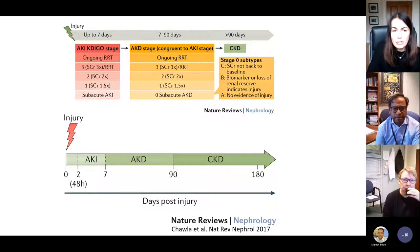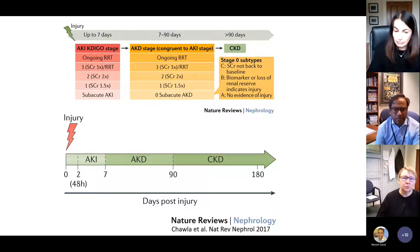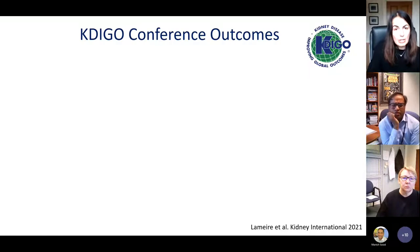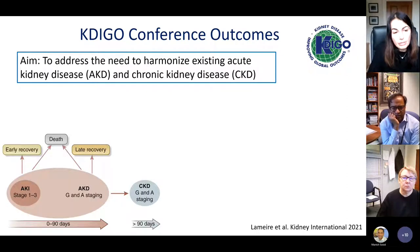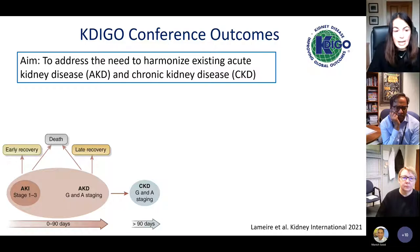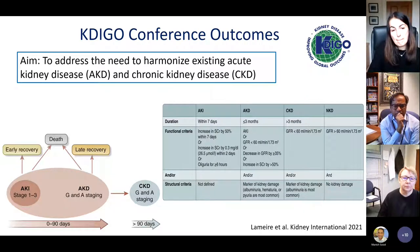The current definitions: AKI is within seven days using creatinine and urine-based criteria with staging of one, two, and three relative to baseline creatinine. AKD covers seven to 90 days with severity staging similar to AKI — a 1.5x rise for stage one, 2x for stage two, and stage three or dialysis for stage three AKD. The 2020 KDIGO conference proposed that AKI could proceed to AKD, but AKD could also occur in isolation without preceding AKI, with outcomes of early recovery, late recovery, or death.